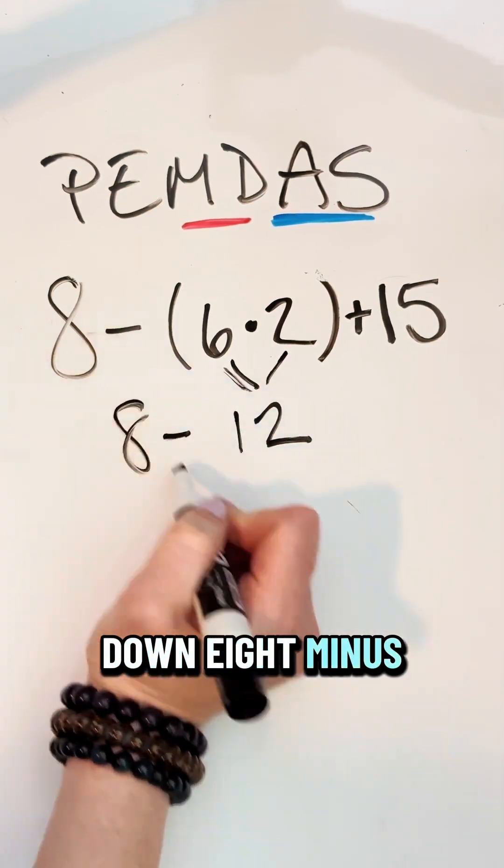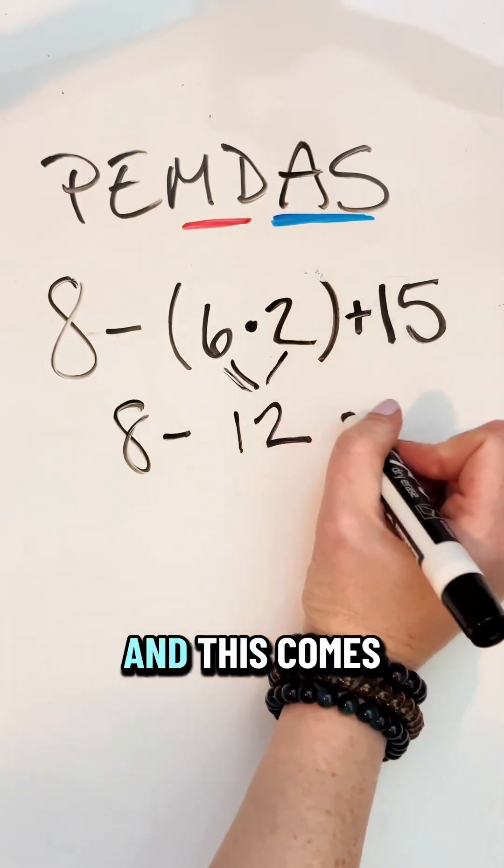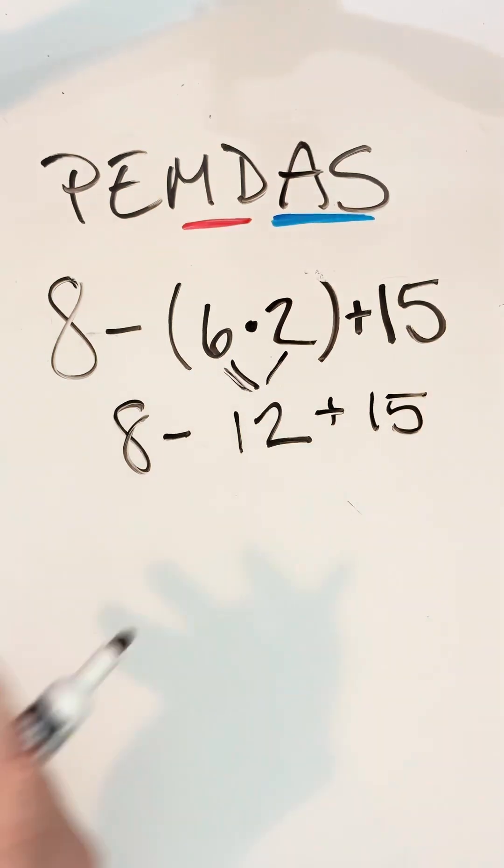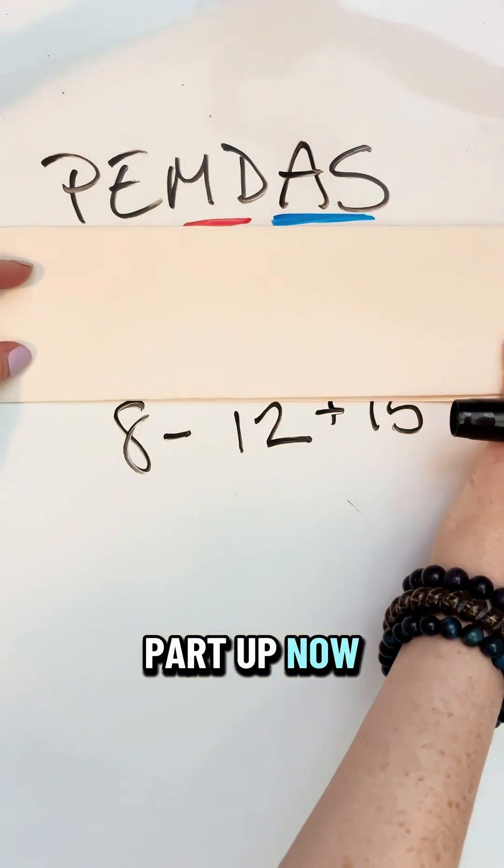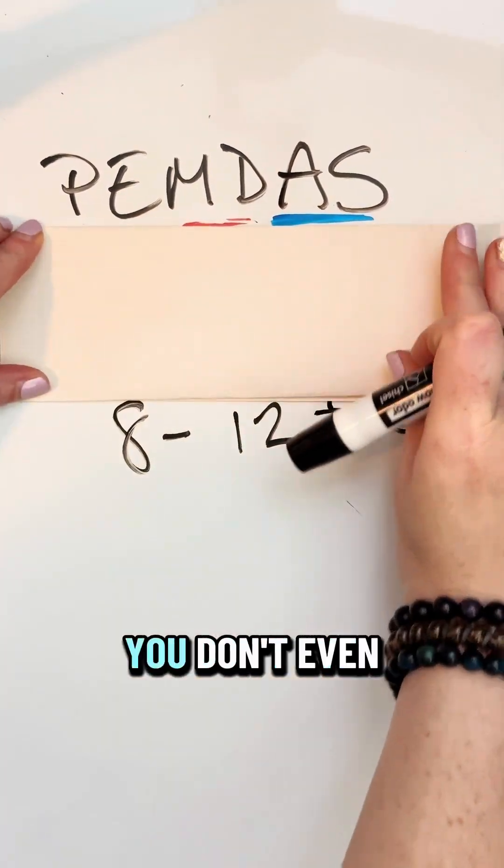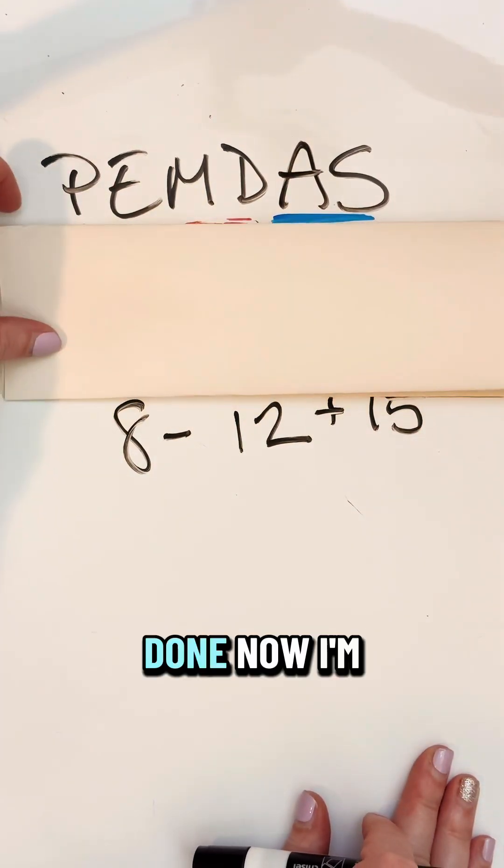Everybody else comes down. 8 minus, this now came down as 12, and this comes down as plus 15. You don't want to be overwhelmed by how much is going on here, so if you want to cover this part up now, that's totally fine. We did that. You don't even need to look at it anymore. Done.